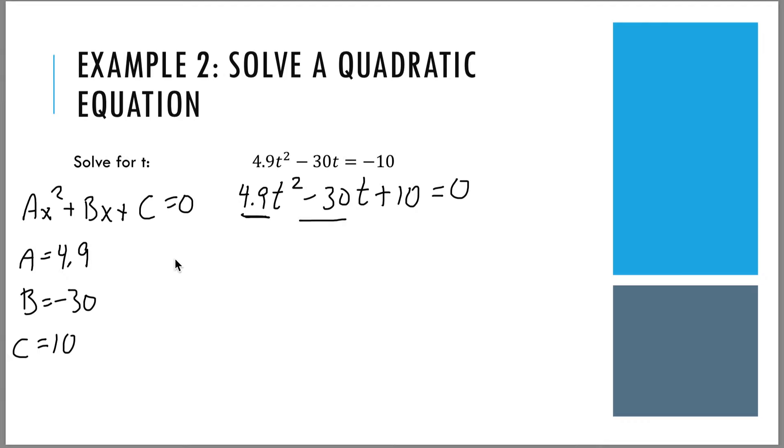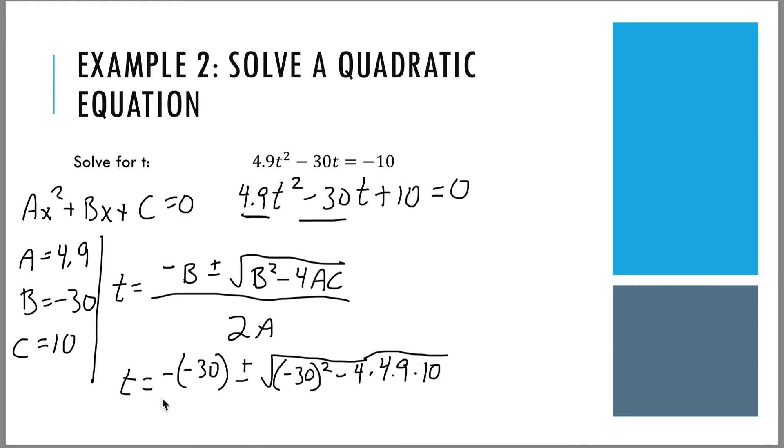The quadratic formula says negative b plus or minus square root of b² - 4ac all over 2a. It says that x or t, whatever your variable is, is going to be equal to this. Now we just have to plug in the numbers. So t is equal to negative, negative 30. Those negatives will cancel out. Plus or minus square root of negative 30 squared. Minus 4 times 4.9 times 10. All of this is under the square root. And then the whole thing is divided by 2 times 4.9.